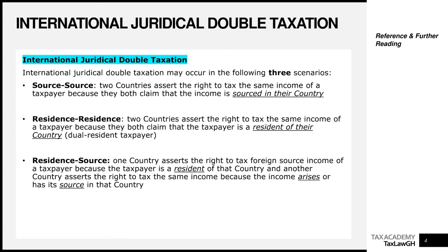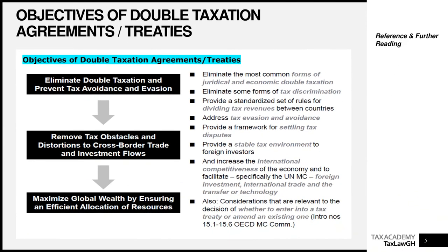Because of these conflicts — source-source, residence-residence, and residence-source — we had to introduce something called double taxation agreements. Without a mechanism to eliminate this situation, it would lead to a scenario where people would not be willing to trade across borders, stifling international trade. We are in a globalized world, and the world is becoming increasingly connected, so we had to have double taxation agreements or treaties.